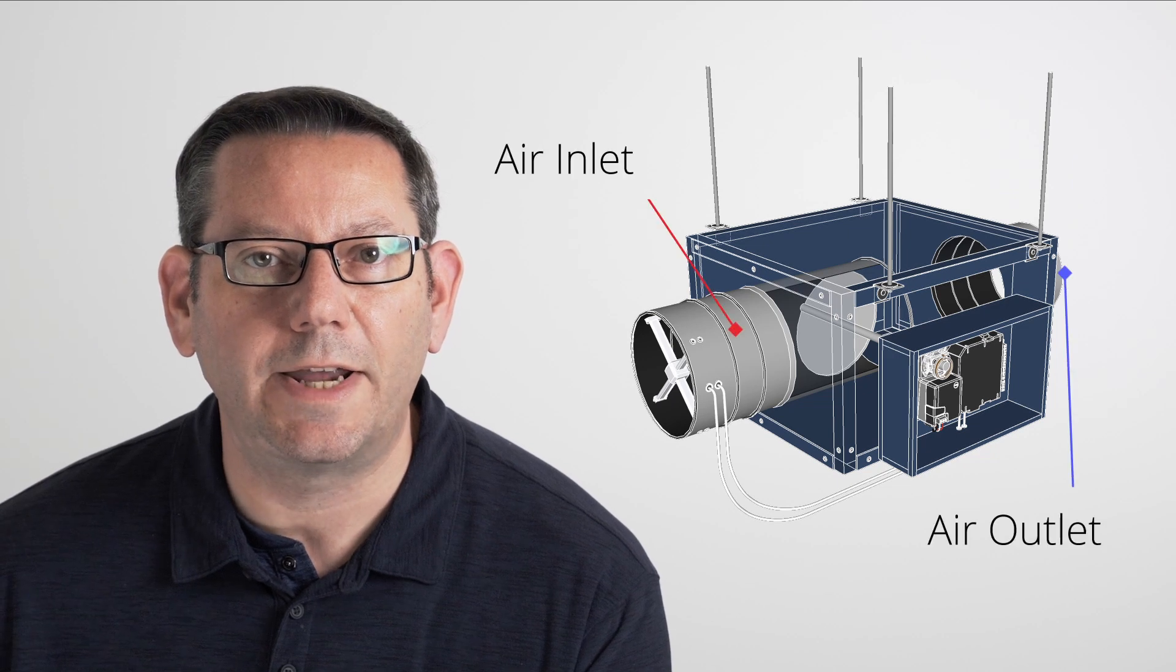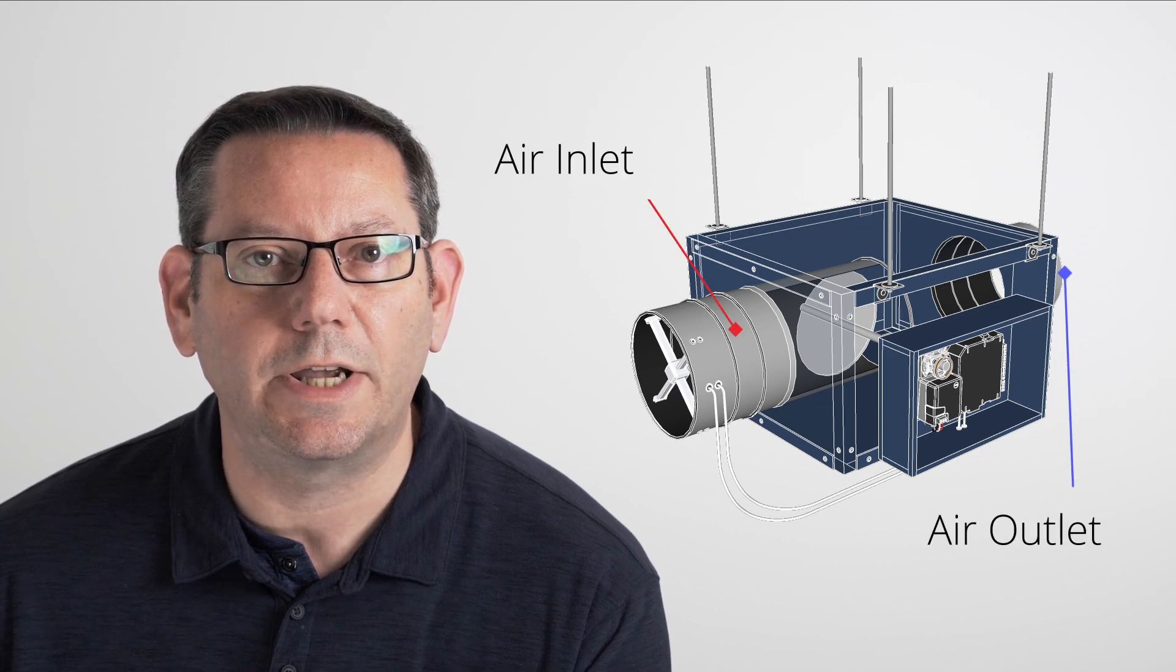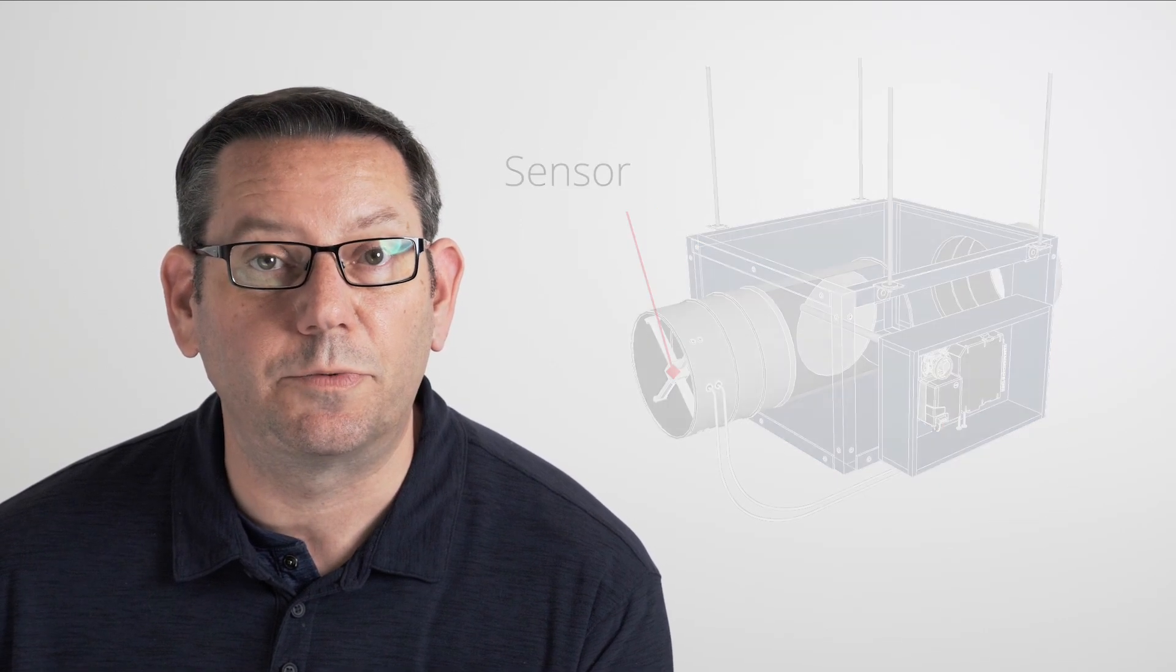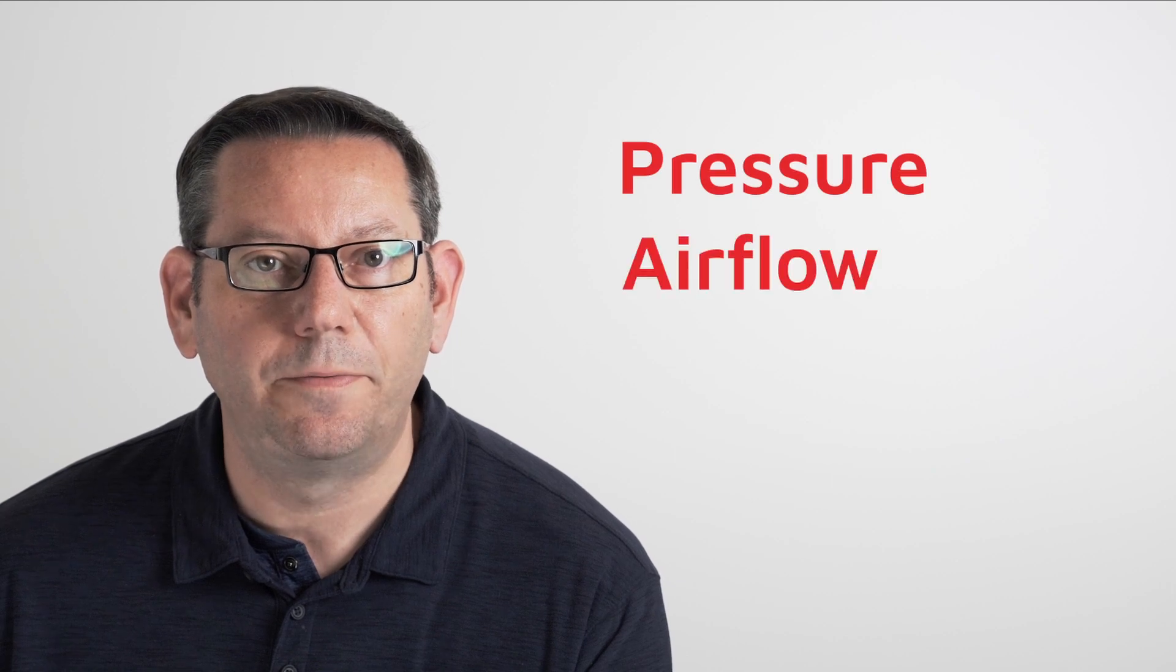Boxes also have inlets and outlets where the air comes in and leaves. These inlets and outlets are often equipped with sensors that gather information such as pressure, airflow and temperature.